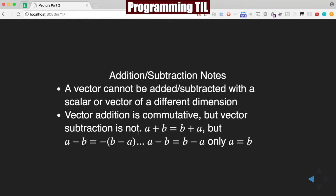But vector subtraction is not commutative, so a - b is not the same as b - a. That's only the case if they are equal. Otherwise, a - b = (b - a) × -1.